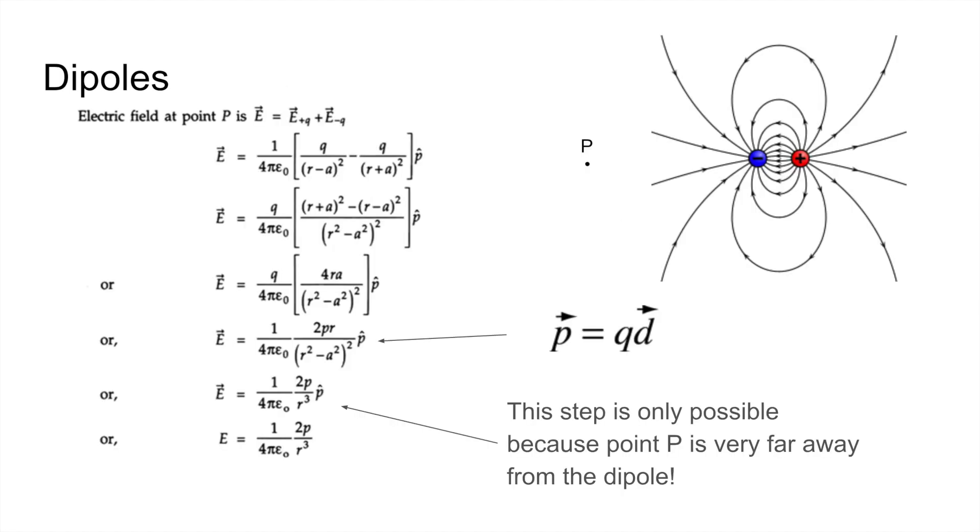Before we move on to distribution of charges, we'll look at dipoles, which are two equal in magnitude, oppositely charged objects placed a certain distance apart. The electric field is given by this equation, which can be derived by summing the electric fields created by each of the charges. The only steps that we really need to note here are the third to last one, where we substitute P, which is the dipole moment.